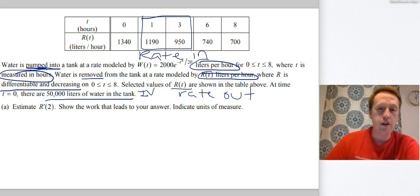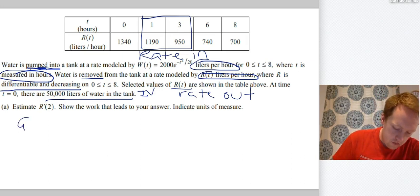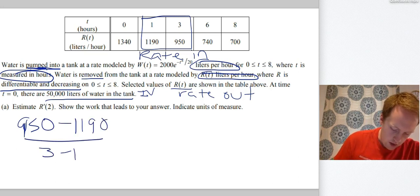Now, I'm going to do average rate of change for this. Average rate of change is the best we can do for getting derivatives when we have a table of values. We can only estimate them. So we're going to do 950 minus 1190 divided by 3 minus 1. And that is equal to, once you do all the division and all that fun stuff, negative 120.